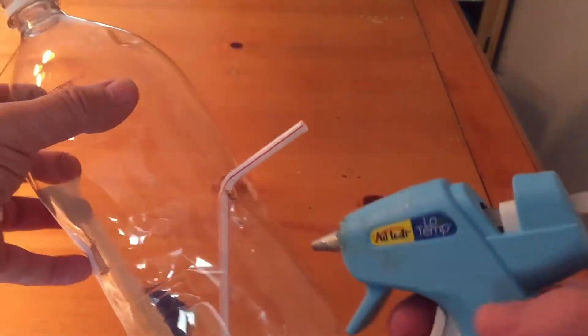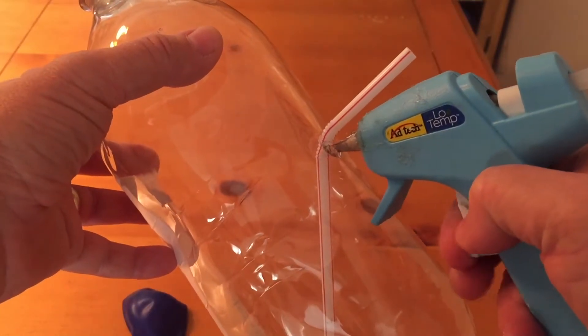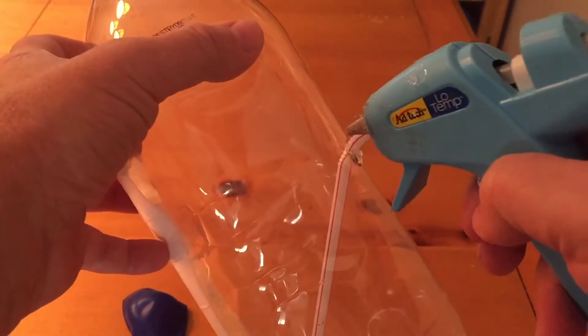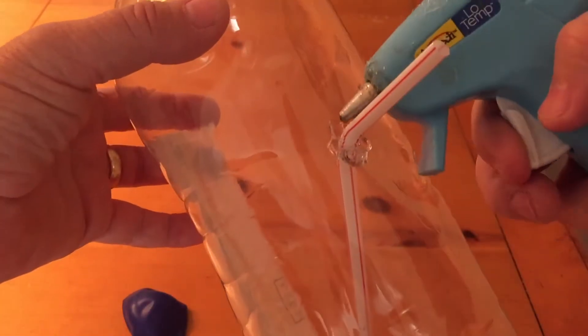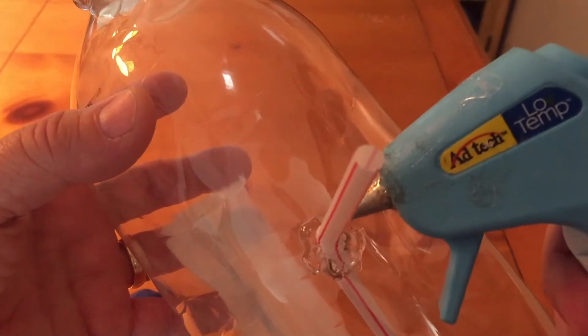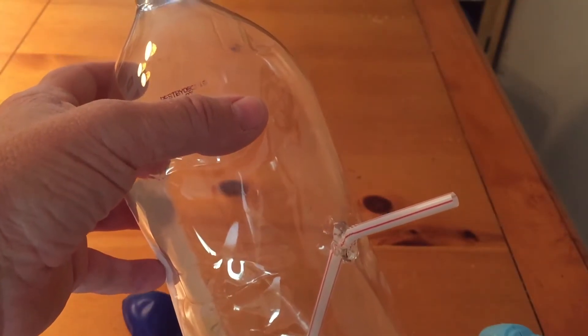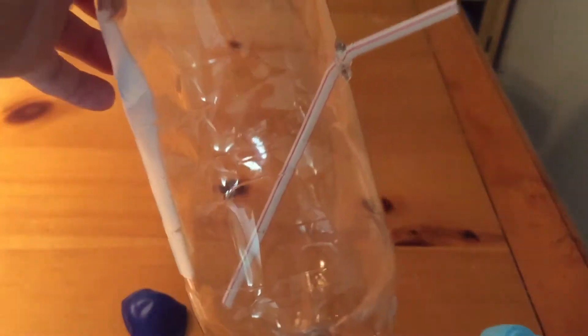Once that's in place, grab your glue gun. Make sure you have an adult with you because it's extremely hot. Cover up the hole so no water can get outside and securely hold the straw. I like to use the glue gun because it dries very quickly and you're ready to do the experiment soon after. When you're finished, it should end up looking just like this.